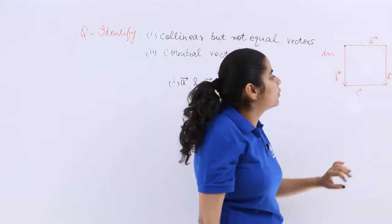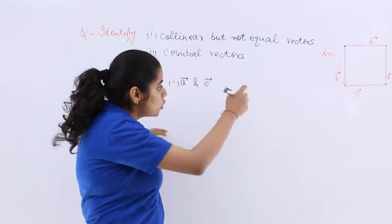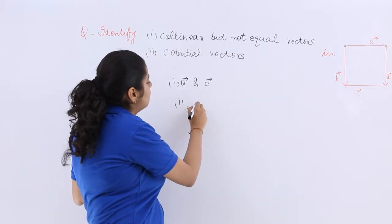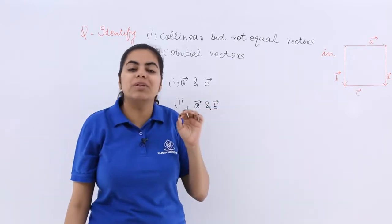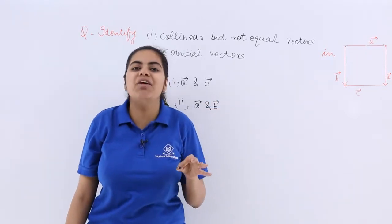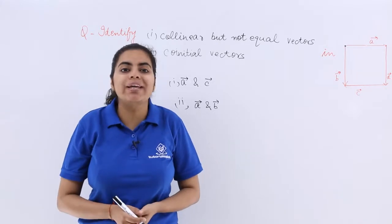What about D and C? Not co-initial. What about A and D? Not co-initial. So only A vector and B vector are such that they are originating from the same initial, same point. So that is co-initial vector.